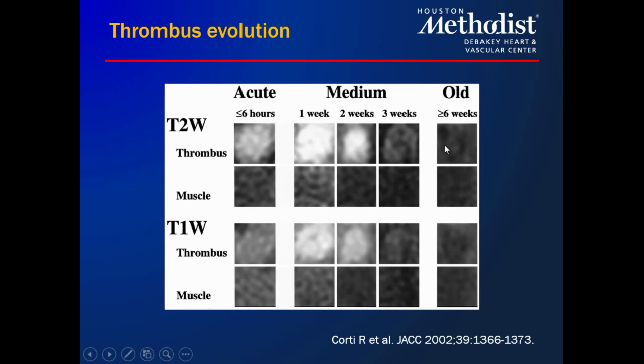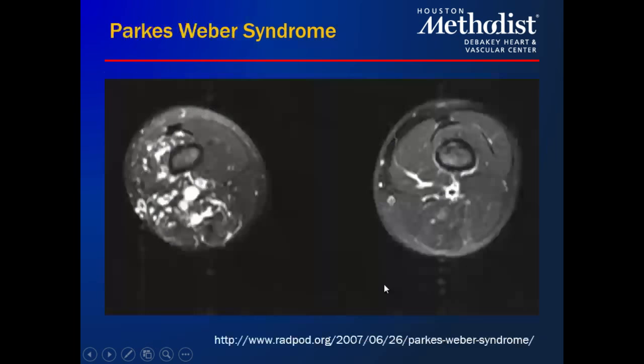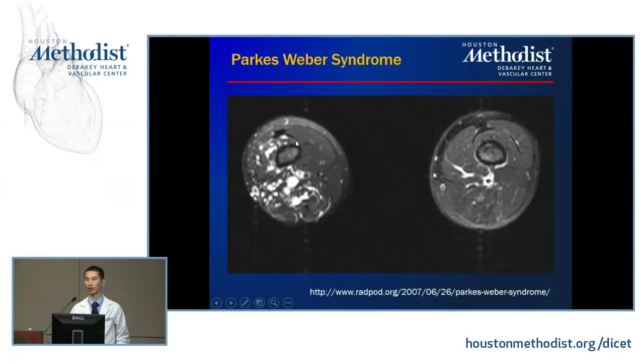There are some exotic forms of AVMs. Klippel-Trenaunay syndrome is a genetic syndrome leading to capillary AVMs, shown as very dramatic arterial enhancement in the affected legs compared to the normal side. This is not to be confused with true AVMs in Parks-Weber syndrome, where there are abnormal connections between arteries and veins.